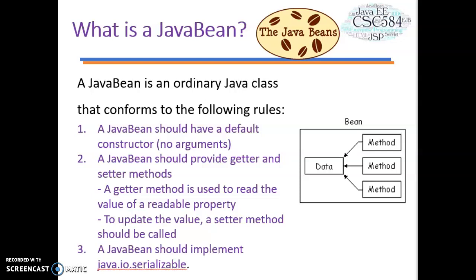Java Beans have several conventions that should be followed. First, a bean should have a default constructor with no arguments. Second, a bean should provide getter and setter methods — a getter method is used to read the value of a readable property, and to update the value, a setter method should be called. Third, a Java Bean should implement java.io.Serializable.